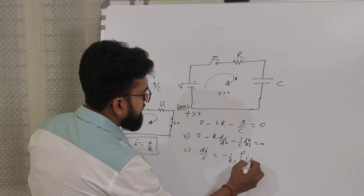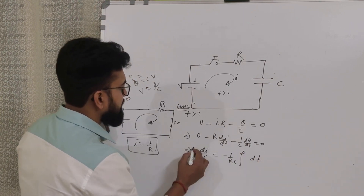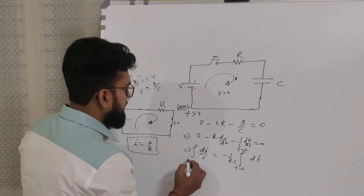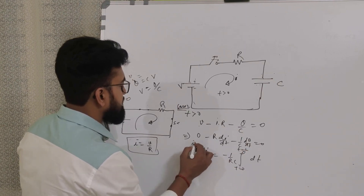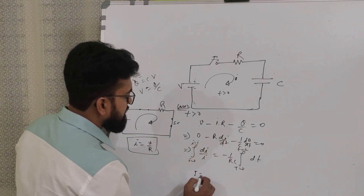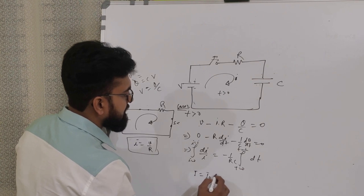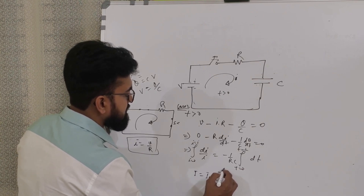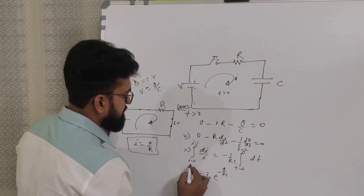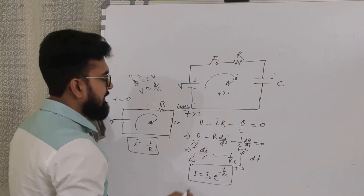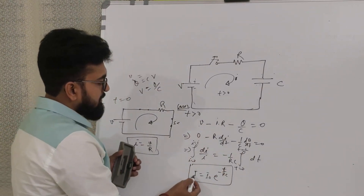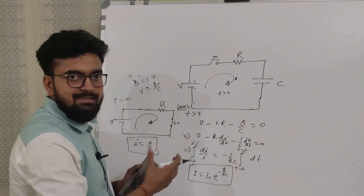Differentiating both sides — V is constant so it gives 0 — we get: minus R·di/dt minus (1/C)·dq/dt equals 0. Rearranging: di/i equals minus (1/RC)·dt. Integrating from t=0 to t and i=0 to i, we obtain the current equation: I equals I₀·e^(−t/RC).